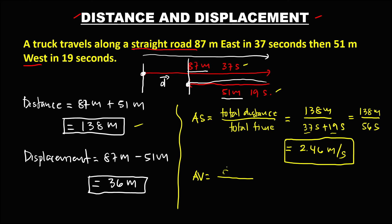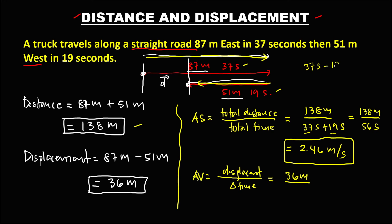To find the average velocity, we use displacement over the difference of time. The displacement is 36 meters. For time, we have 37 seconds minus 19 seconds, which equals 18 seconds.